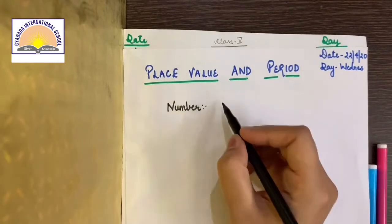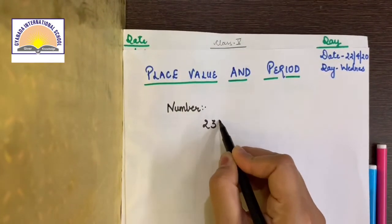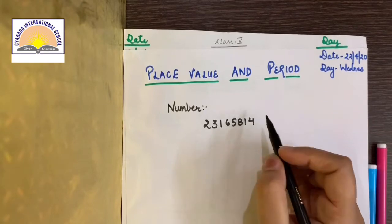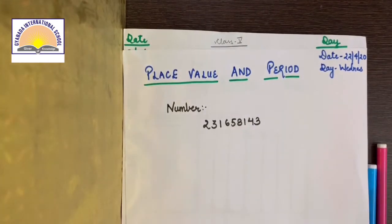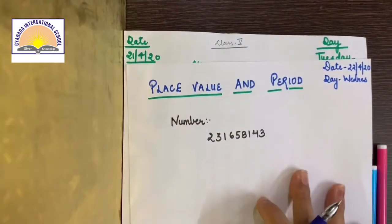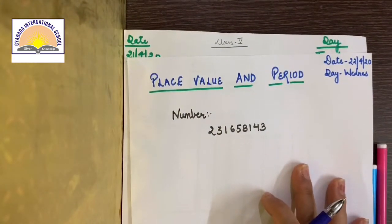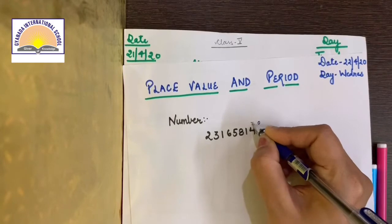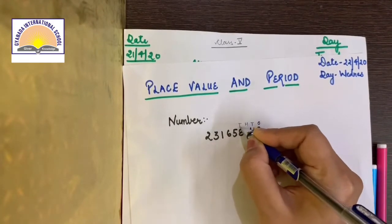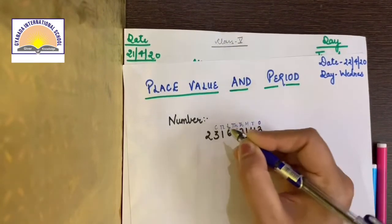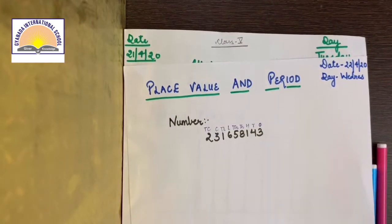Say the number is 2, 3, 1, 6, 5, 8, 1, 4 and 3. This is the number. What did I tell you? Whenever we take a number the first thing that we have to do is put its place value. How do we put place value? We start putting it from this side. Say with me. Once, tens, hundred, thousand, ten thousand, lakh, ten lakh, crores and ten crores.